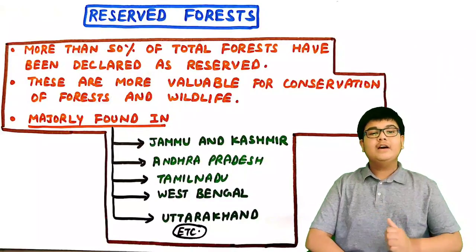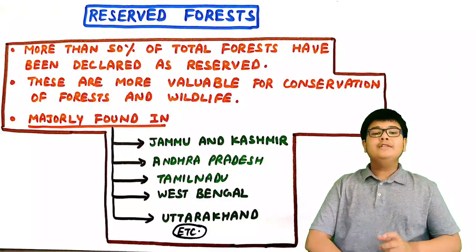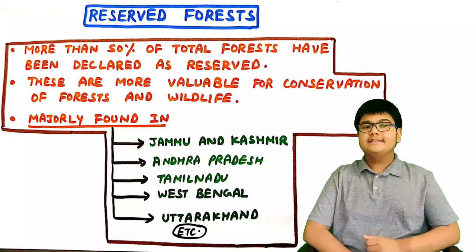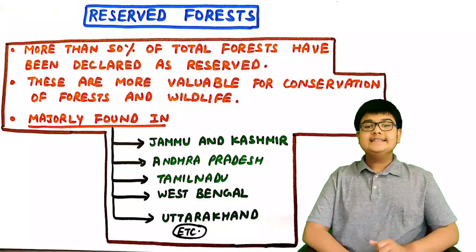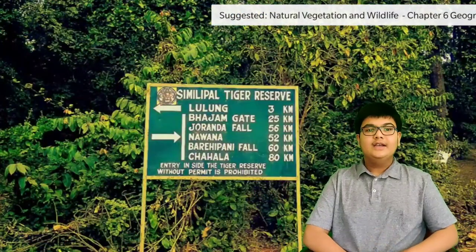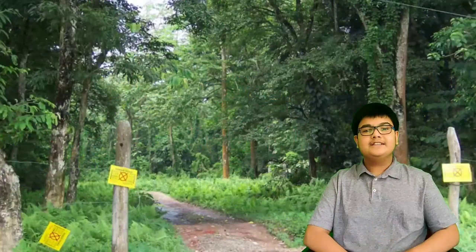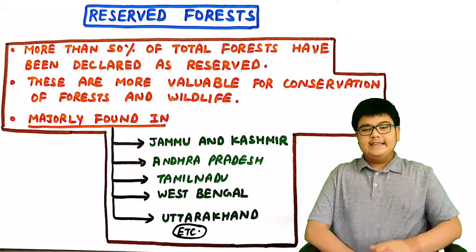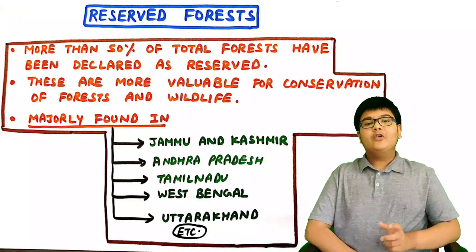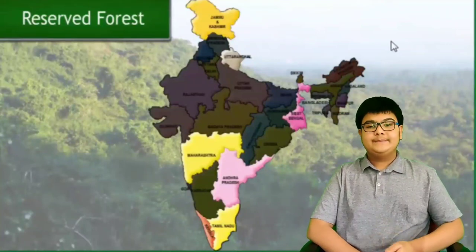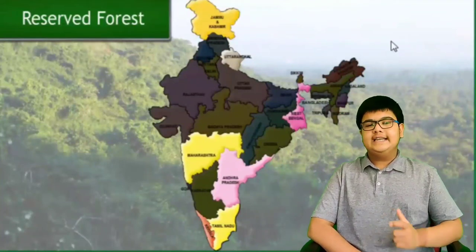First, reserved forests. More than 50 percent of the total forests have been declared as reserved forests. These are the most valuable for conservation of forest and wildlife — human activity is not allowed in these forests. They are majorly found in Jammu & Kashmir, Andhra Pradesh, Tamil Nadu, West Bengal, Uttarakhand, etc.